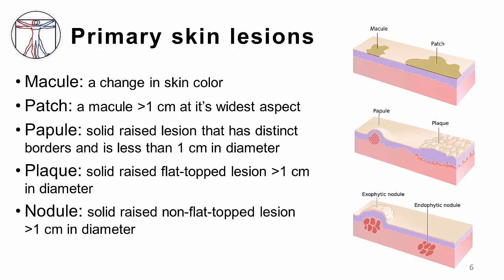A macule is simply a change in the color of the skin. It is totally flat, and if you were to close your eyes and run your fingers over the surface of a purely macular lesion, you could not detect it. A macule greater than one centimeter at its widest dimension may be referred to as a patch.